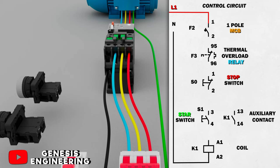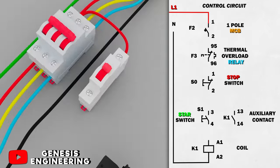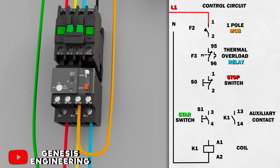We leave with the phase conductor of the one-pole MCB and connect terminal 95 of the thermal relay which is a normally closed contact.